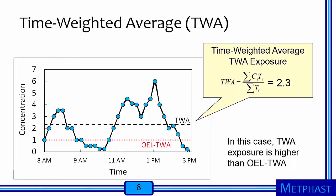Let's go back and consider this exposure profile. We can compute the arithmetic mean exposure, or the time-weighted average TWA exposure. In this example, I calculate the TWA exposure to be 2.3, shown with the black dotted line. We can compare the TWA exposure to the TWA occupational exposure limit, shown as the red line. In this case, the TWA exposure is higher than the occupational exposure limit, and we have a problem — we are going to have to protect the worker, either by providing protective equipment or applying some type of controls.